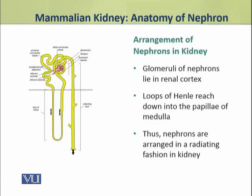The glomeruli of nephrons lie in the renal cortex, while the loop of Henle reaches down into the papilla of the medulla.